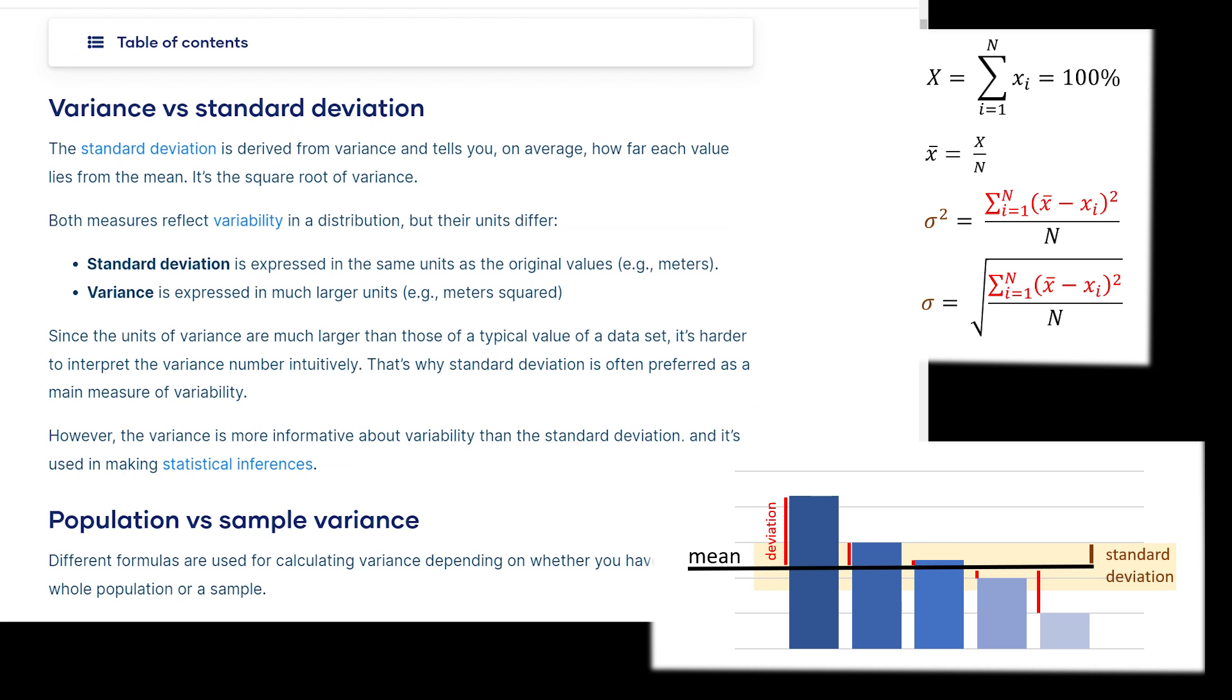Since the units of variance are much larger than those of a typical value of a data set, it's harder to interpret the variance number intuitively. That's why standard deviation is often preferred as a main measure of variability.